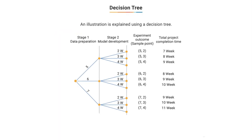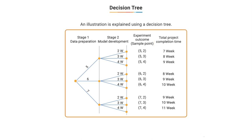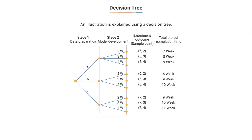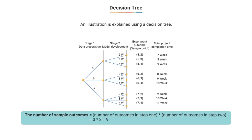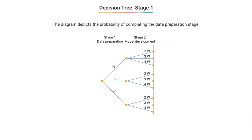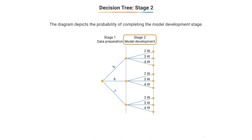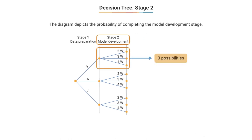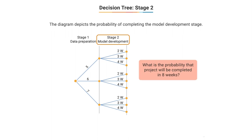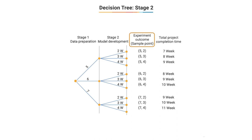Using a decision tree, the total number of sample outcomes is 3 × 3 = 9. The probability of completing data preparation in exactly 5 weeks is 3/9 = 1/3. The probability of completing model development in exactly 3 weeks is 1/3. The probability of completing the whole project in exactly 8 weeks: there are 2 out of 9 experimental outcomes where this happens, so the probability is 2/9 ≈ 22.22%.